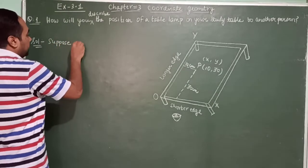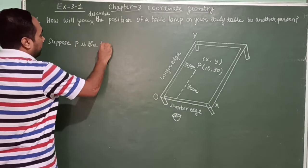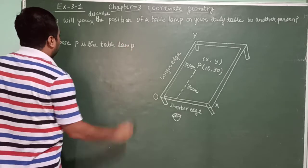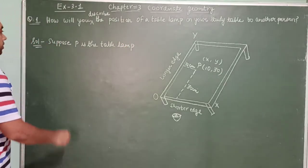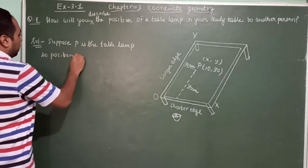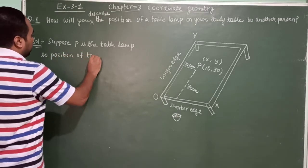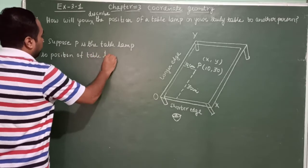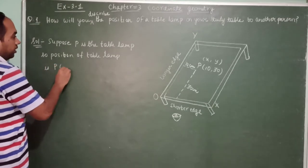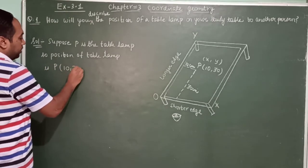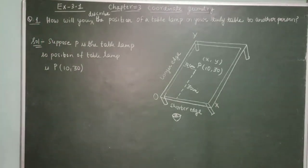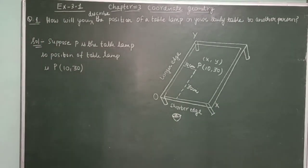Suppose P is the table lamp. The position of the table lamp is P(10, 30). Please note it down.